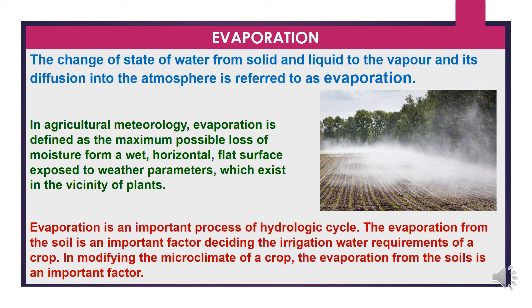Evaporation is an important process of the hydrologic cycle. The evaporation from the soil is an important factor deciding the irrigation water requirements of a crop, and also an important factor in modifying the microclimate of a crop.